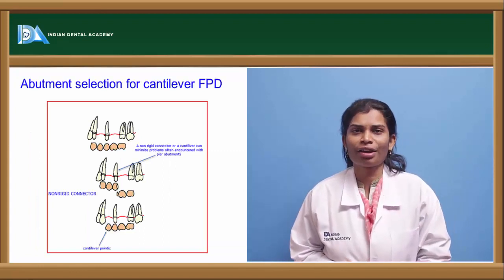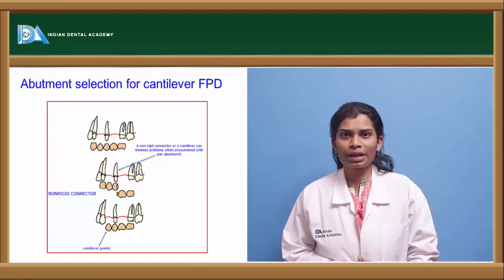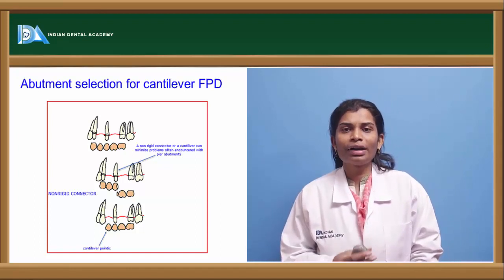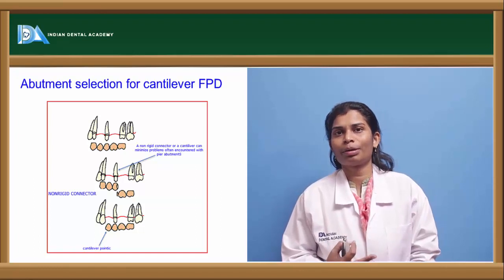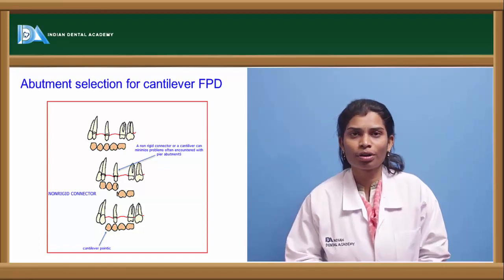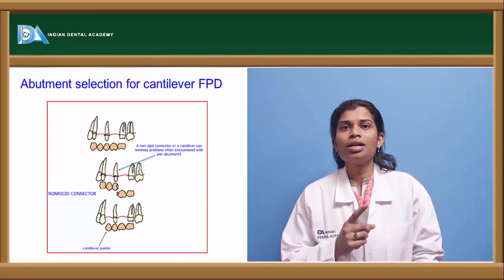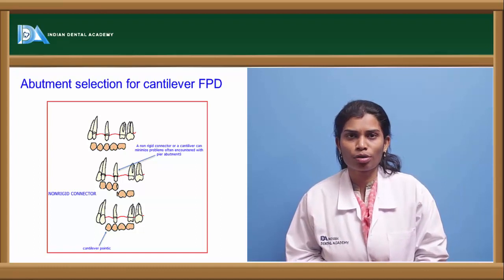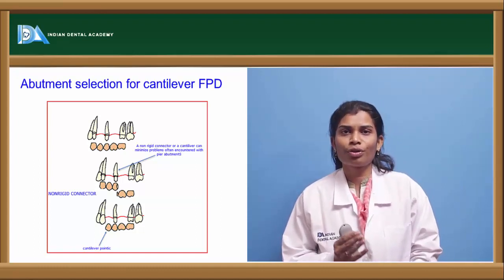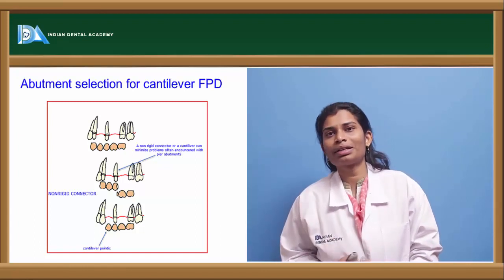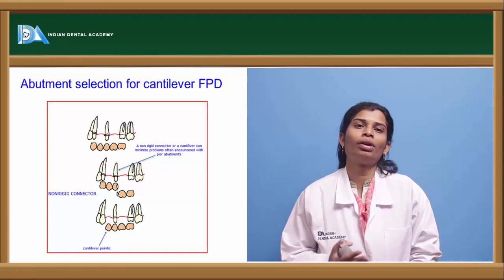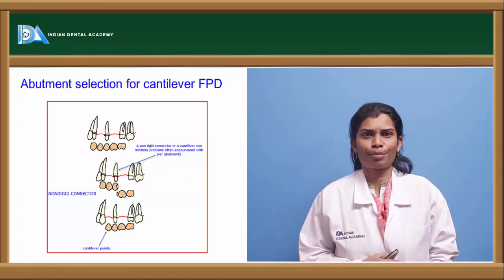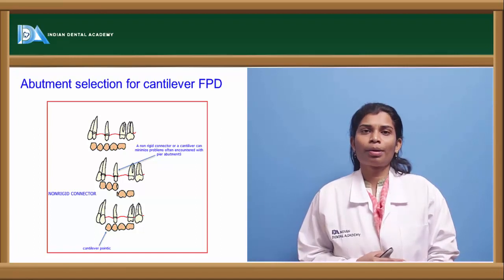A cantilever FPD is one where there is an abutment only on one side of the fixed partial denture — a single abutment supports the pontic with no secondary abutment on the other side. The cantilever FPD is ideal for replacing a maxillary lateral incisor, where a single canine can be used as the abutment without preparing the central incisor. The canine is the most ideal tooth for a cantilever FPD due to its arch location, bone support, root length, and surrounding bone thickness.